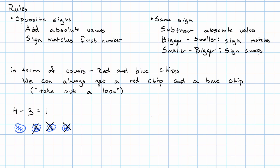What if I want to take 3 minus 4, though? Then I have three blue chips and I want to get rid of four of them. I can't do that. I need to take out a loan.